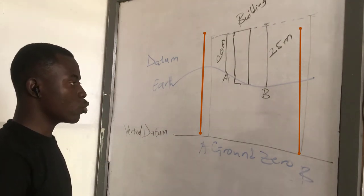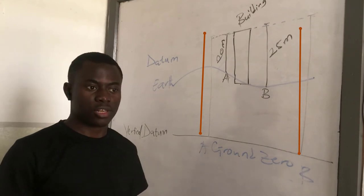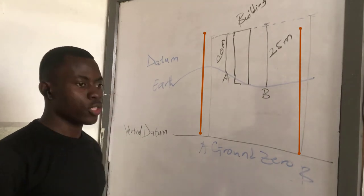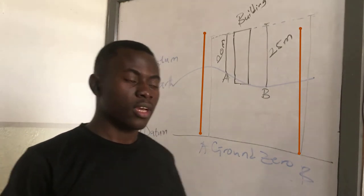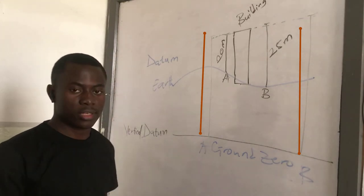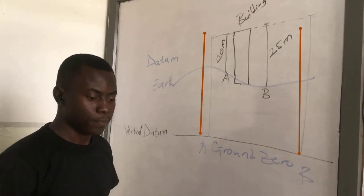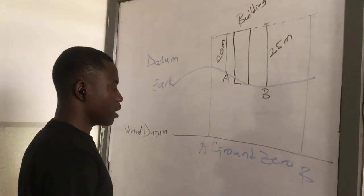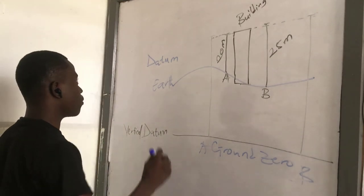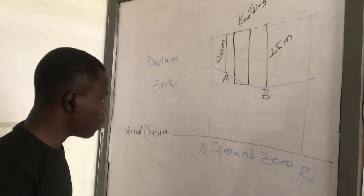If you want to measure the height between two places, you need a reference point, which is a flat plane, so that you can say that at any place, the height of this point is this with reference to the datum.